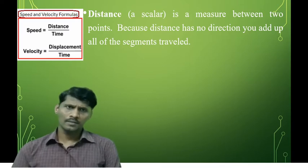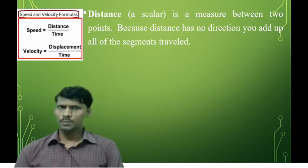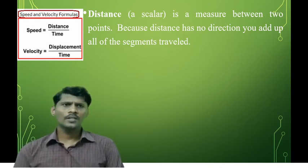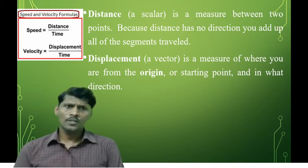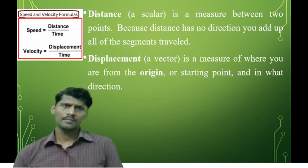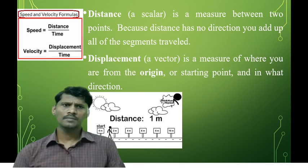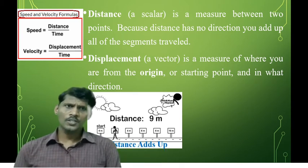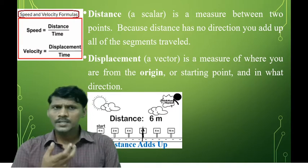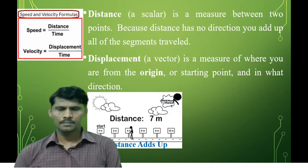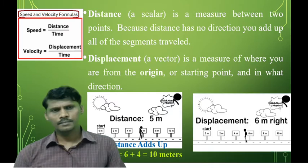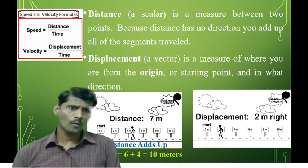Distance is a scalar quantity used to measure between two points. Because distance has no direction, you add up all the segments traveled. Displacement is a measure of where you are from the origin or starting point and in what direction, making it a vector quantity.